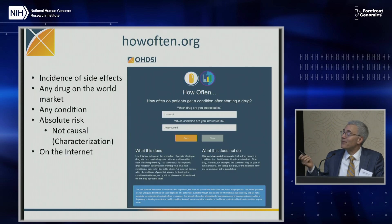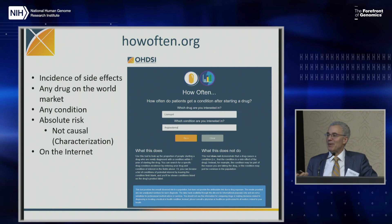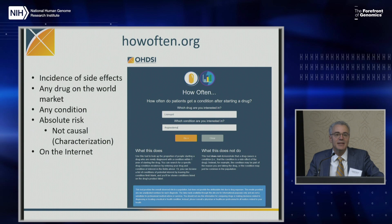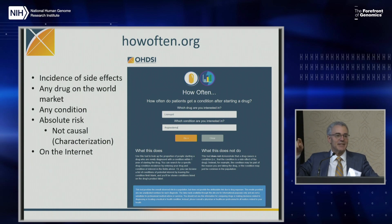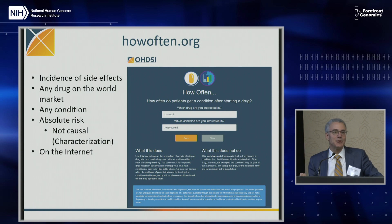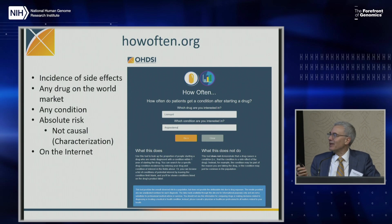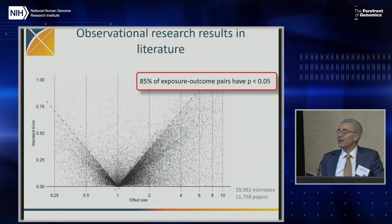Second example, quickly: howoften.org. If your family member has a new prescription, you can check what the incidence rate is for every drug in the world, for every side effect in SNOMED — which is 300,000 — and it lists the absolute risk. This is not the attributable risk, it's not causal. It means people on statins get a lot of heart attacks, not because statins cause it, but because you got the statin because you were at risk for a heart attack. But it gives you an upper limit of your rate.